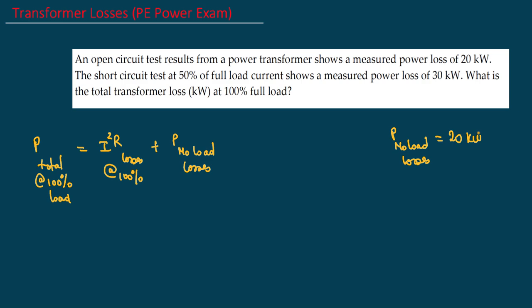The load losses — the I²R losses — come from changes in load current. In the short circuit test, the low-voltage winding is shorted and the voltage applied on the other side is increased gradually until full load current flows through the shorted low-voltage winding. What is given here is the I²R losses at 50% load.